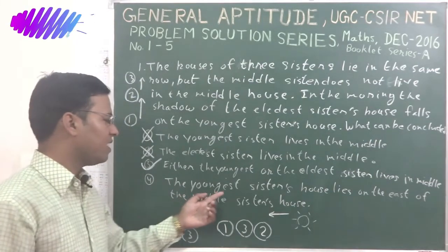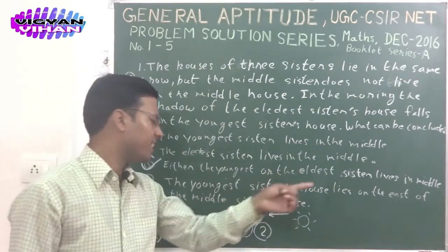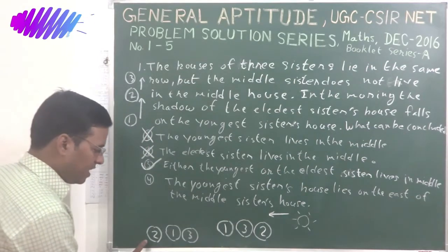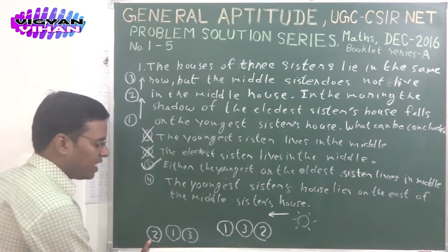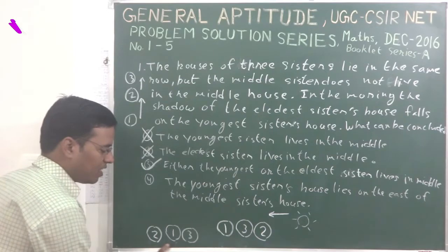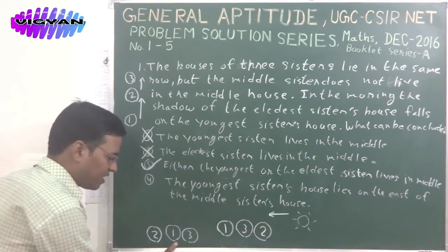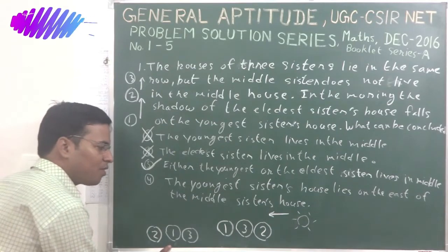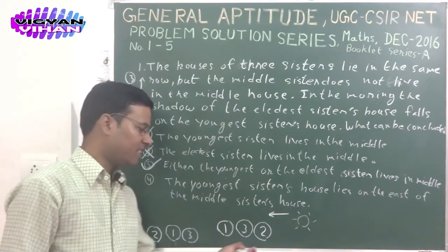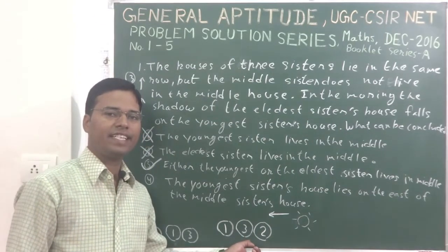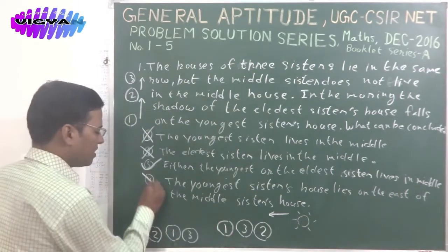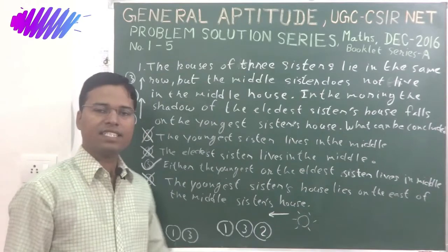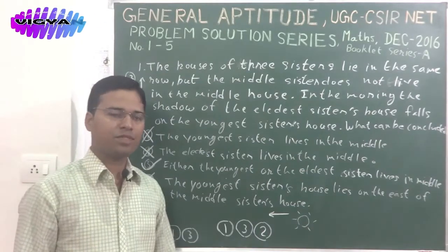Option 4: the youngest sister's house lies on the east of the middle sister's house. Here, the youngest sister's house is on the east of the middle sister's house in one condition, but the other condition violates it. So this may not be our answer. The correct answer is option 3.